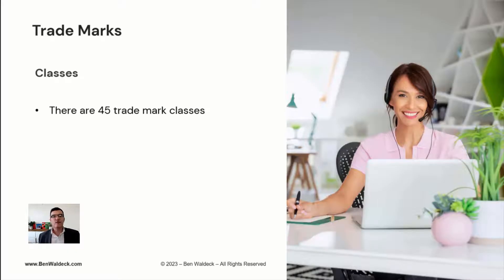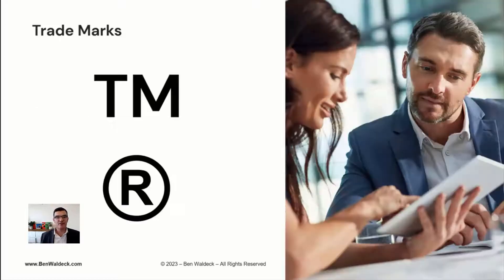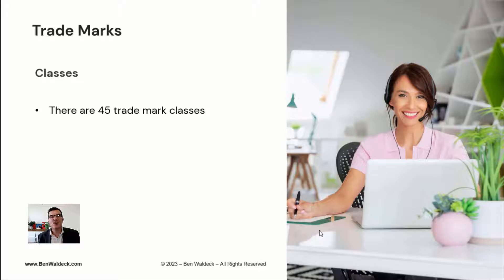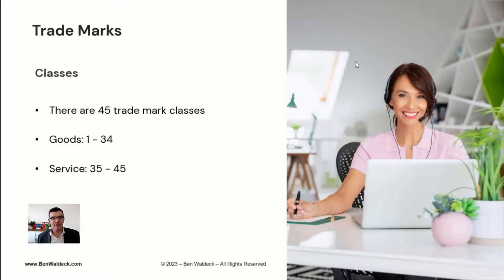Let's look at trademark classes — short for classifications. There are 45 trademark classes broken up into goods and services. When you register a trademark, you must nominate which goods or services you're seeking protection under. You can't claim a trademark for everything.